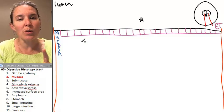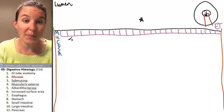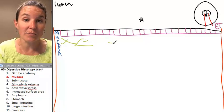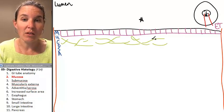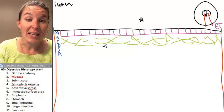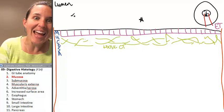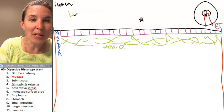Deep to the mucosa is a layer of loose connective tissue. Look at my connective tissue fun times. It's loose connective tissue, and it's called the lamina propria.